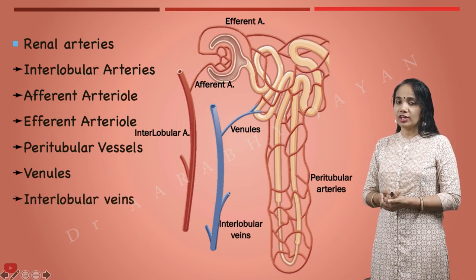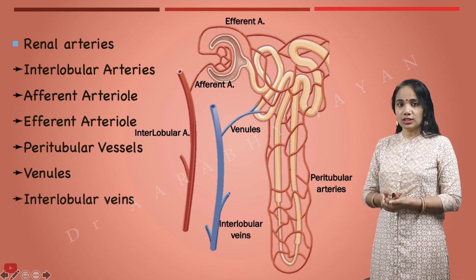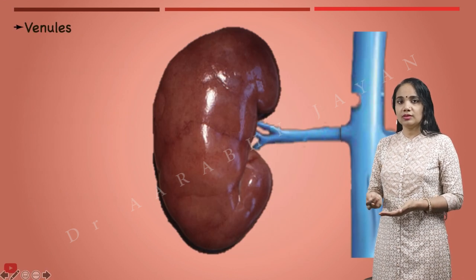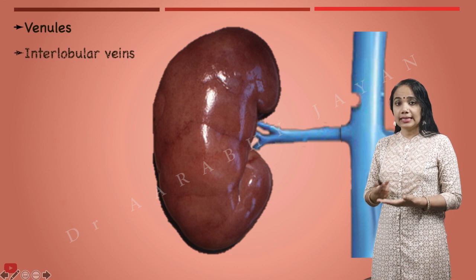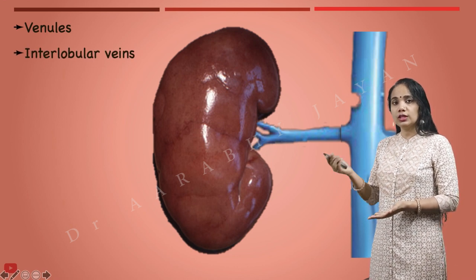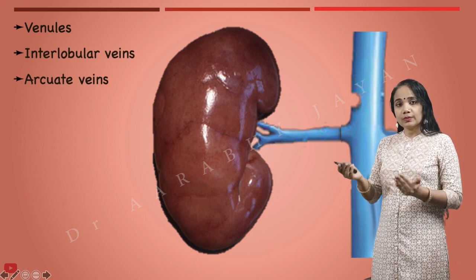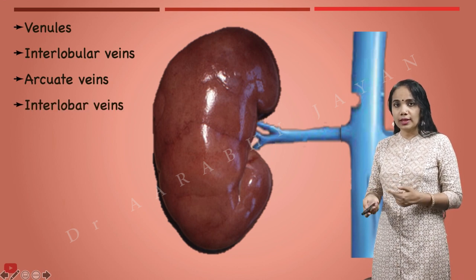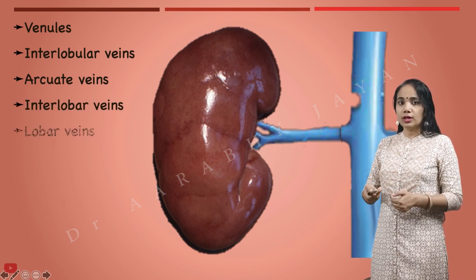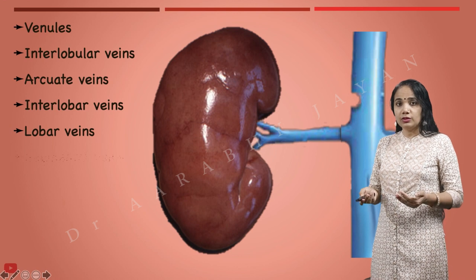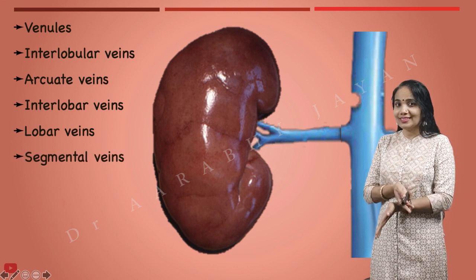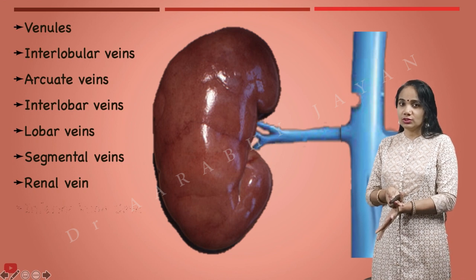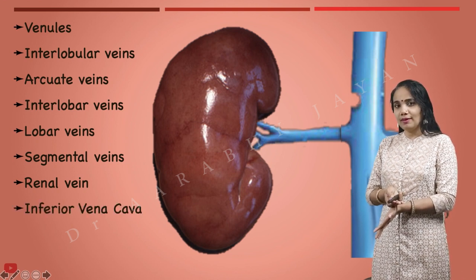From the venules onwards, the vessels follow the same names as the arteries in reverse. Venules drain into interlobular veins, then arcuate veins, then interlobar veins, then lobar veins, then segmental veins, and finally the renal vein, which drains into the inferior vena cava.